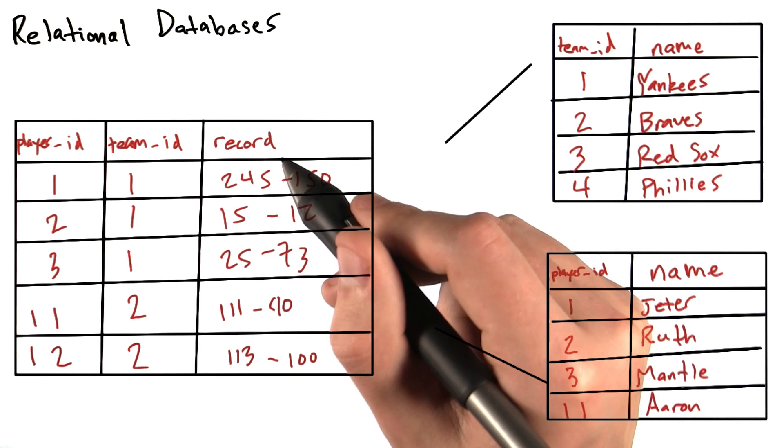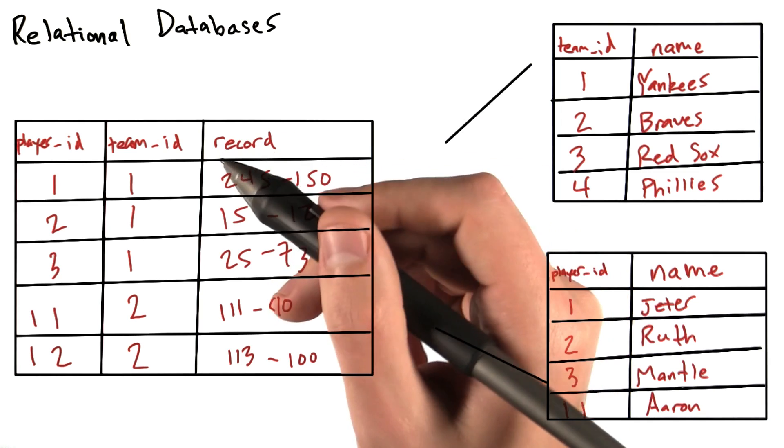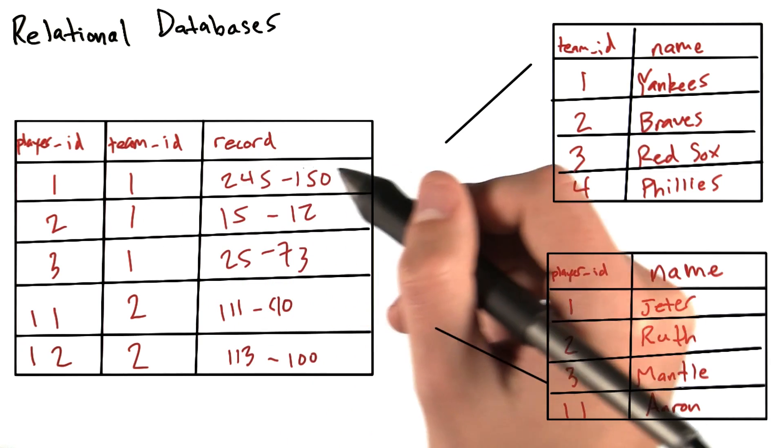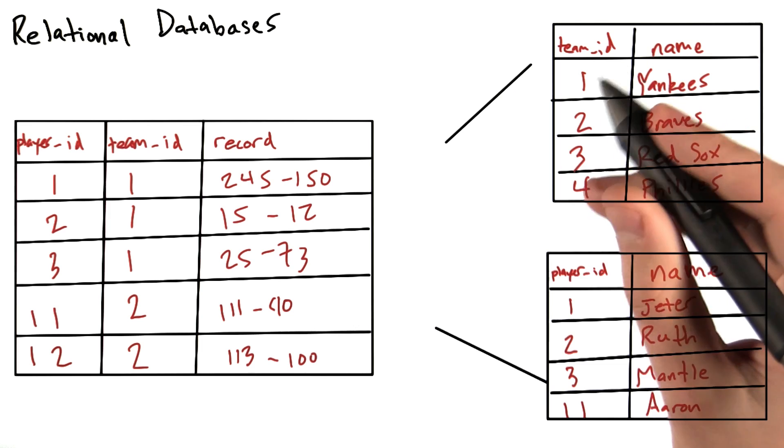Each row contains values for each column, such as 1 or 1 or 245, 150, or 1 and Yankees.